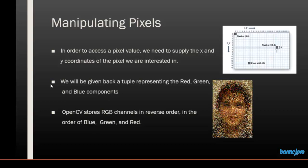Hello and welcome back. In this session we will see how we can manipulate individual pixels and also areas of pixels inside an image using OpenCV. In order to access a pixel value we need to specify the x and y coordinates of that pixel. For example, this pixel has a y value of 0 and x value of 0, and another one has an x value of 6 and y value of 13, so it is located at point 6,13 of the image.